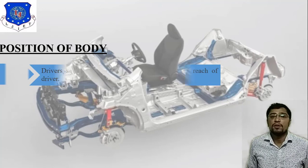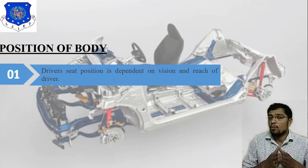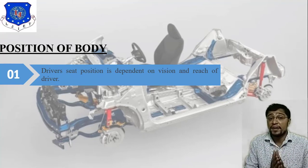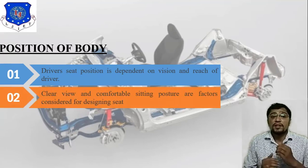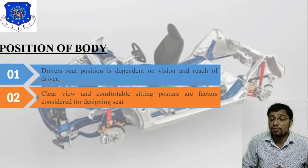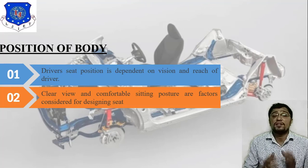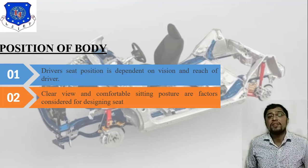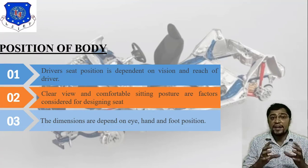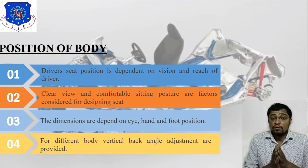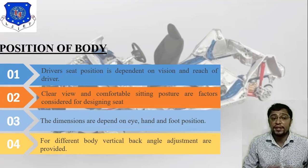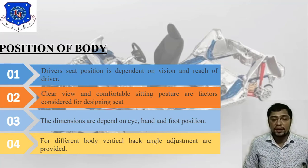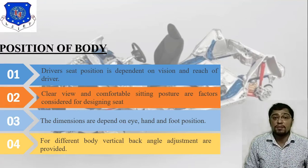The second factor is position of body. There are mainly four criteria. First, driver seat position depends on the vision and reach of the driver. Second, clear view and comfortable sitting posture are factors considered for designing the seat — including visibility and reach of different controls such as steering and braking. Third, dimensions depend on eye, hand, and foot position. Fourth, for different body sizes, vertical back angle adjustment is provided, making the driver seat a flexible point.